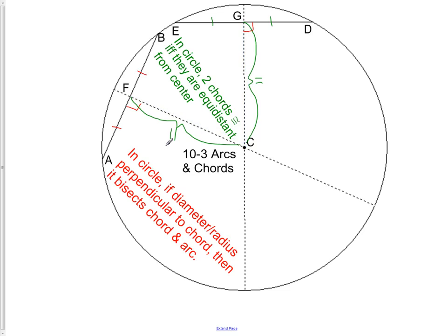In our picture here, we have chord FC, which is 11, and chord CG, which is also 11. Since both of those chords have a measurement of 11, it means that ED is congruent to AB.